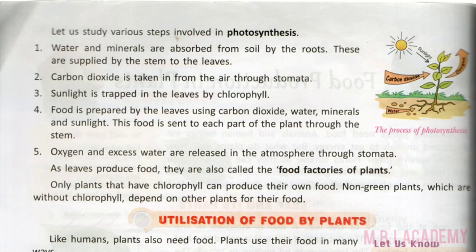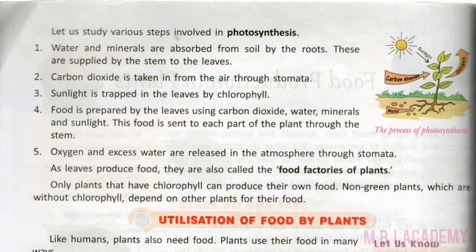Let us study the various steps involved in photosynthesis. Water and minerals are absorbed from the soil by the roots and are then supplied to the leaves. Water and minerals are absorbed by the roots and then travel into the stem and leaves.